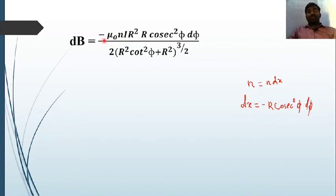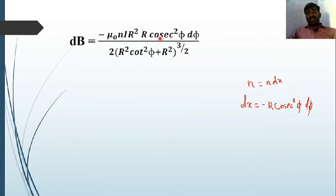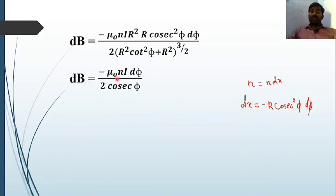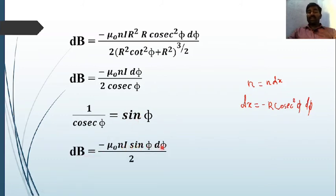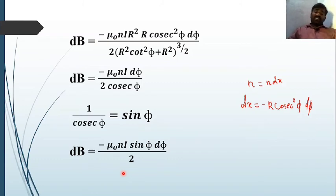After simplification, the equation becomes dB = μ₀nI·cosec²φ·dφ / (2·cosec³φ). One cosec²φ from numerator cancels, leaving dB = μ₀nI·dφ / (2·cosecφ) = μ₀nI·sinφ·dφ / 2. Therefore: dB = −μ₀nI·sinφ·dφ / 2.